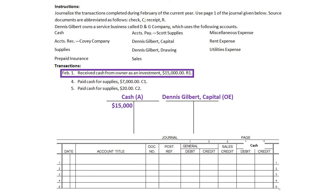Dennis Gilbert Capital is an owner's equity account that sits on the right-hand side. Since the worth of the business is going up and it sits on the right-hand side, we credit it. In the journal, we put the date — Feb 1. We only write 'Feb' for the first transaction of that month. We put the account title as Dennis Gilbert Capital, doc number R1 (receipt 1), and enter it as a general credit. Received cash goes in the cash debit column for $15,000. That's how you record that transaction.